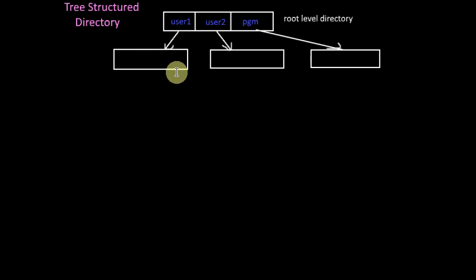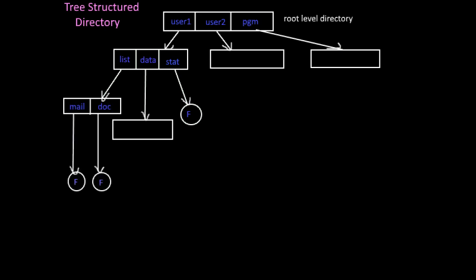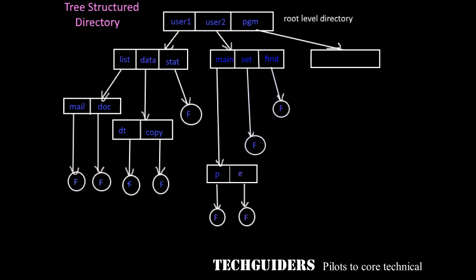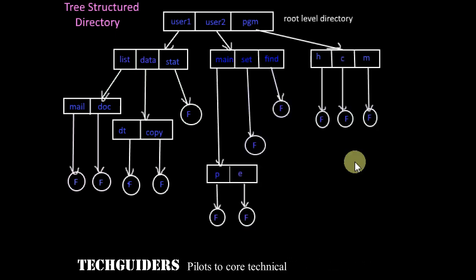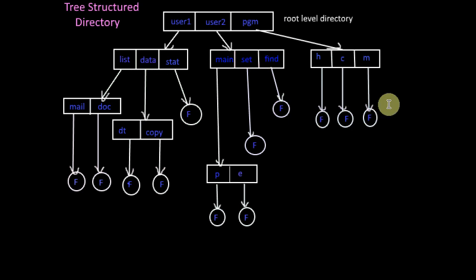This user directory can either contain file entries, or the files can be organized further into subdirectories and so on. The root is always a directory and the leaves are the files, and any directory can contain either a set of subdirectories or a set of files or a combination of both.